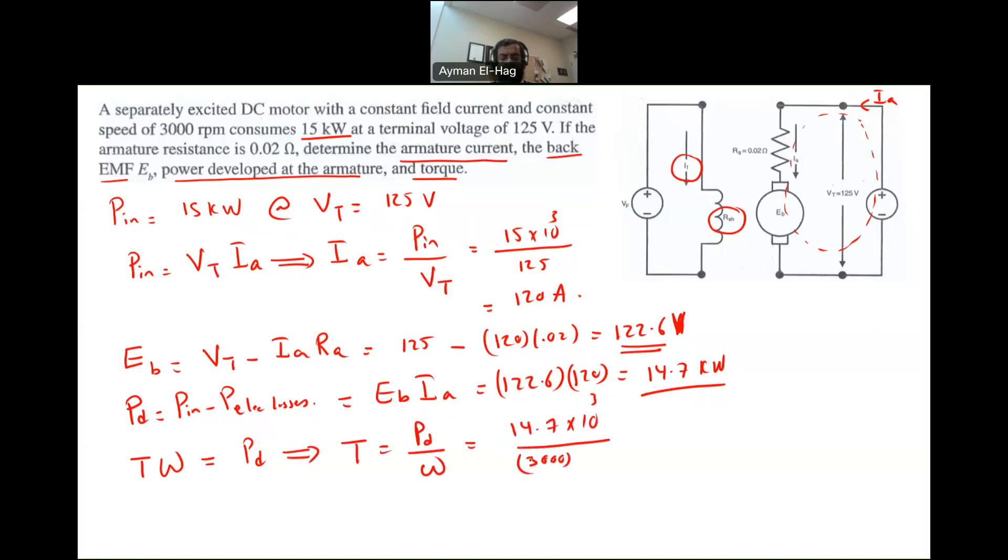We have to convert the RPM to radian per second for omega. So this, we have to multiply it by 2 pi divided by 60. It's a conversion. And when you do that, you will find that your torque is 46.82 Newton meter.